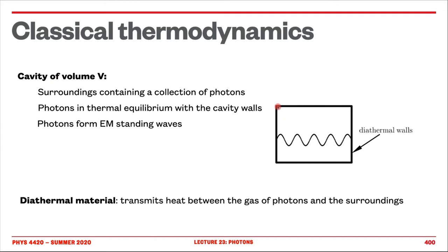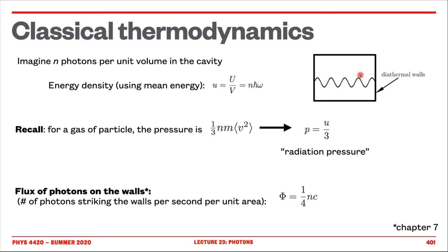A cavity is an object of volume V — we see just a cross section here. The cavity itself is the surrounding of the system, shown as the thick black line on this figure. This object is in thermal equilibrium with the outside, so the temperature is maintained and the photon can exist in there. We are using diathermal material so that heat can be exchanged with the surrounding, meaning the temperature of the object is in equilibrium with the temperature of the surrounding — basically like a reservoir, but here for radiation.